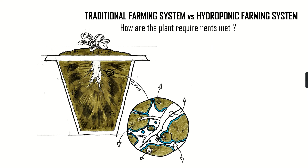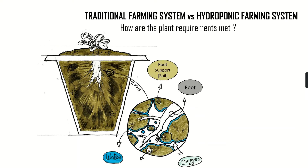Here we have a plant growing in soil the old school way. If we had a microscope at hand, we would be able to see that around the roots of the plant there are little pore spaces where air and water are present. In addition to providing air and water, the soil will also be the support system for the roots to hang on to and will contain the nutrients the plant needs for its development. Finally, all of this will be powered by natural sunlight.